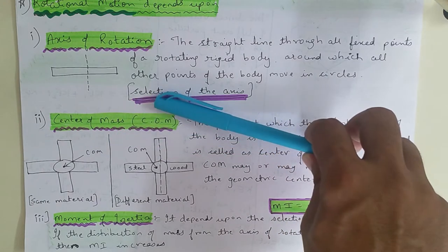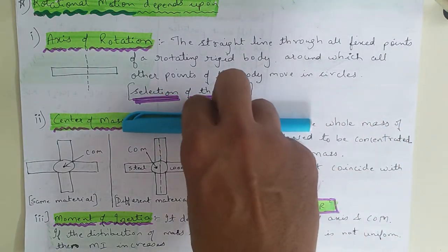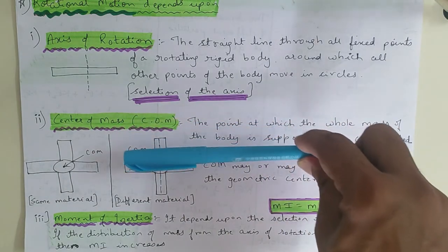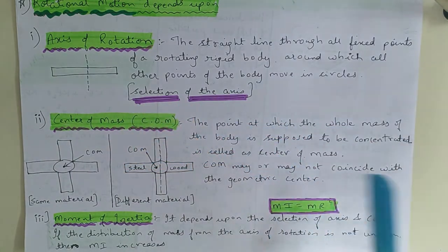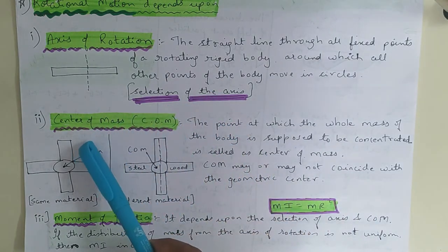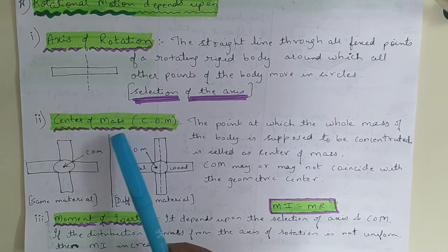This means that my selection of axis - I can pass the axis from here also, I can pass the axis from here also, that totally depends. But my selection of axis, from which point I should choose, that center of mass will tell us.